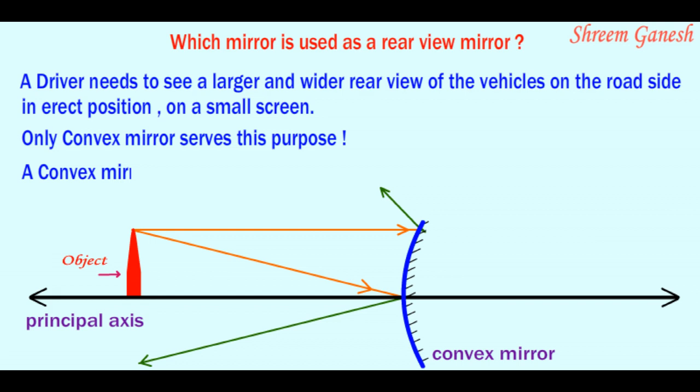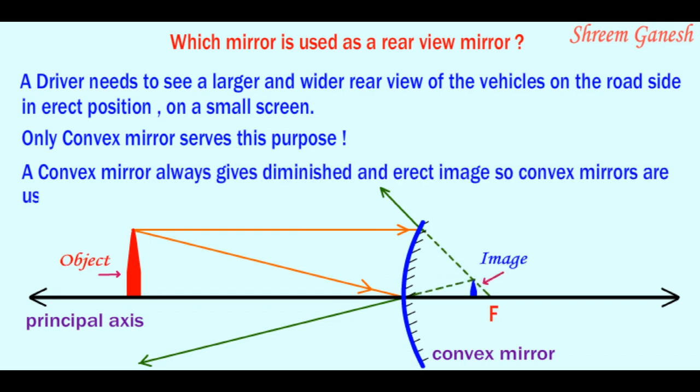A convex mirror always gives diminished and erect image, so convex mirrors are used as rear view mirrors in vehicles.